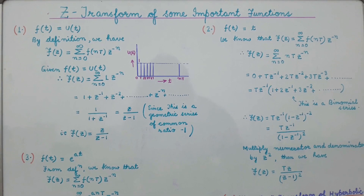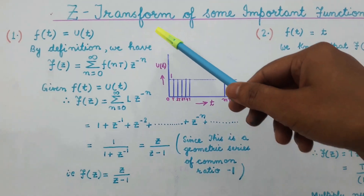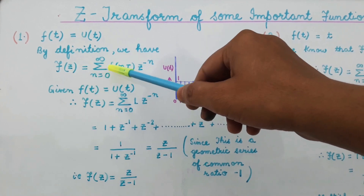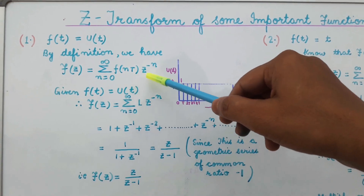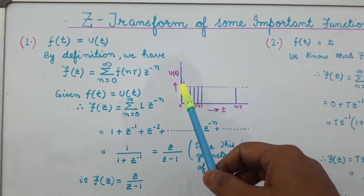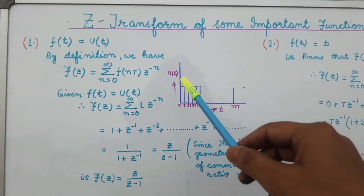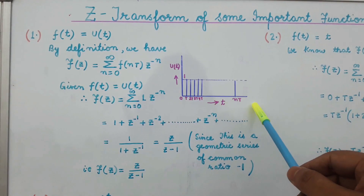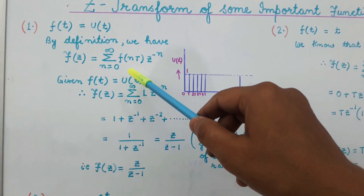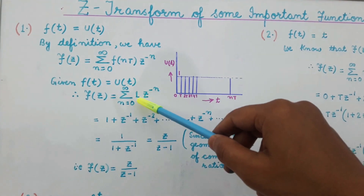The first function is the unit step function. We have to find the Z transform of this unit step function. From the definition of Z transform, F(Z) is given by summation n=0 to infinity of f(nT) into Z to the power minus n. The value of f(t) is u(t), which is a unit step function whose magnitude is equal to 1 for t greater than or equal to 0. We have plotted u(t) in the form of discrete samples. On substituting the value of f(t), since u(t) = 1, we get F(Z) = summation n=0 to infinity of 1 into Z to the power minus n.